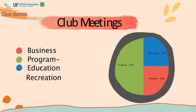Club meetings should not just consist of a business meeting. All meetings should have three components: the business portion, educational program, and recreation. The recreation portion should entail 25% of the meeting time, the program portion should entail 50% of the meeting time, and the remaining 25% should be for recreation.